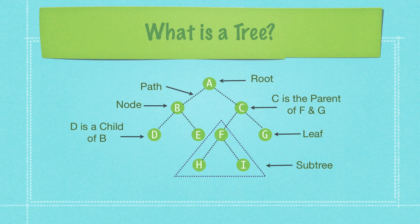Whenever you're thinking about trees — and I know some of you already know this, but I'm going to review it quickly — the top node of a tree, which looks kind of like a tree structure, is known as the root. The lines that connect all of the nodes thereafter are known as paths or edges. This is a node, just like all the other green dots are nodes. C, in this situation, is going to be the parent of the children nodes, which are F and G.